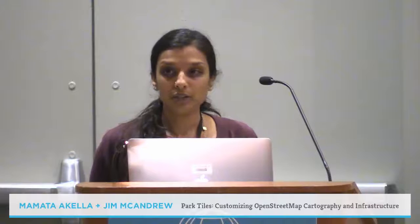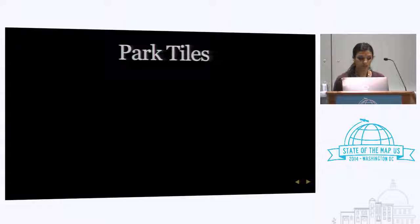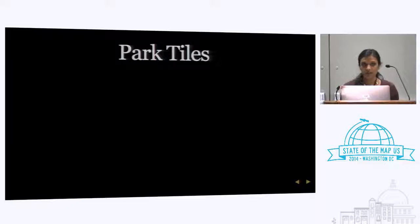About two years ago at State of the Map in Portland, I introduced this base map for the first time. At that time, we were figuring out ways to use open source tools, OpenStreetMap data, and combined National Park Service data to see what we could come up with. That map only went to zoom level 9, which is about 1 to 1 million scale, so obviously you couldn't go into a lot of detail.